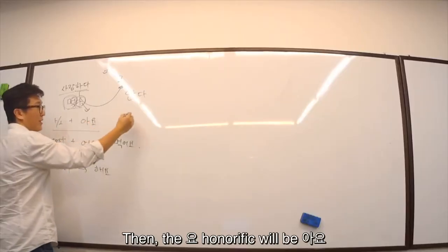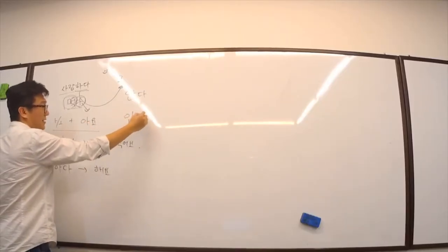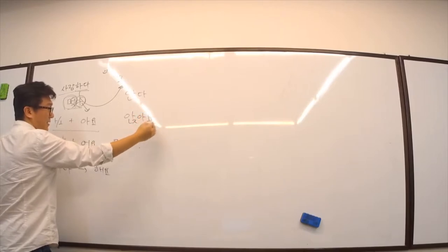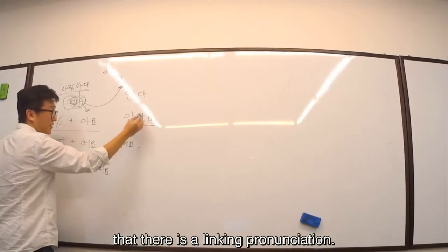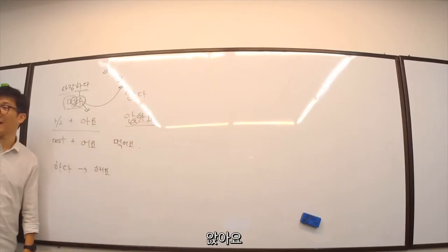You want to sit? 앉아. 앉아. The ㅏ or ㅓ comes in. Then, after that, there's a big pronunciation. 앉아.